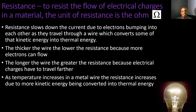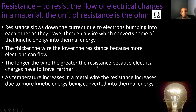Now let's look at resistance, which means to resist the flow of electrical charges in a material. The unit of resistance is the ohm, represented by the omega symbol. Resistance slows down current due to electrons bumping into each other as they travel through a wire, converting some kinetic energy into thermal energy. The thicker the wire, the lower the resistance; the longer the wire, the greater the resistance; and as temperature increases in a metal wire, resistance increases due to more kinetic energy being converted into thermal energy.